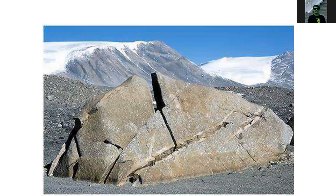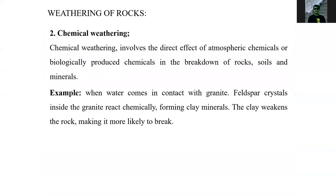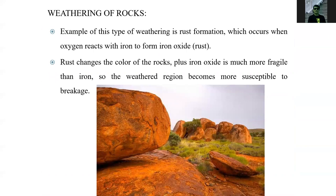Physical weathering causes rocks to crack and break into pieces. Chemical weathering involves the direct effect of atmospheric chemicals or biologically produced chemicals in the breakdown of rocks, soils, and minerals. For example, when water comes in contact with granite, feldspar crystals inside the granite react chemically, forming clay minerals, which weaken the rock making it more likely to break. Rocks that show rust-type colors are samples of chemical weathering.